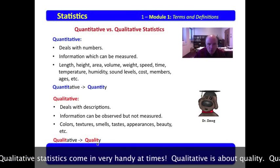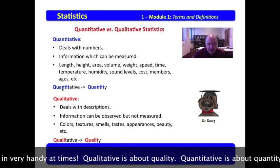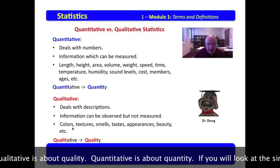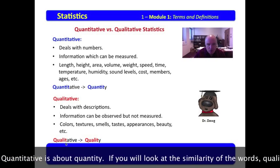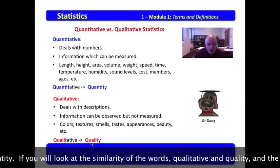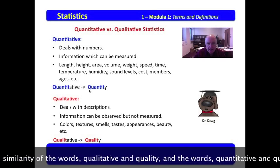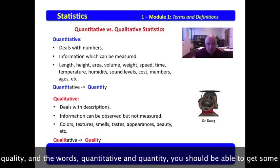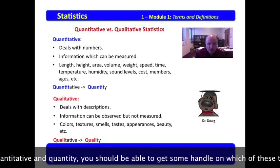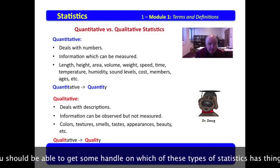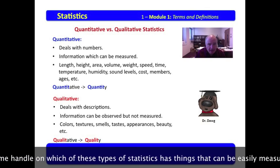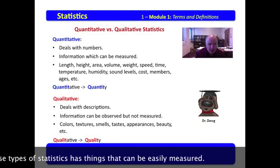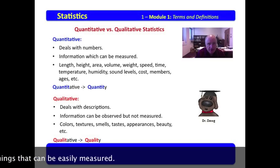Qualitative is about quality. Quantitative is about quantity. And if you will look at the similarity in the words qualitative and quality and the word quantitative and quantity, then you should be able to get some handle on which of these types of statistics has things which can be easily measured and which has things which cannot be easily measured.